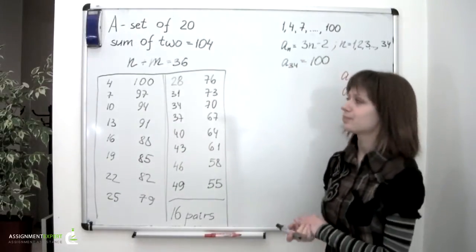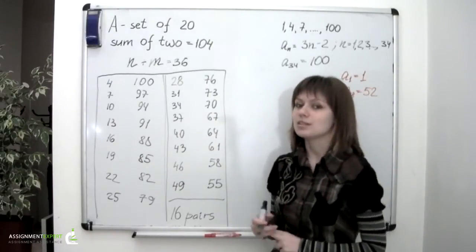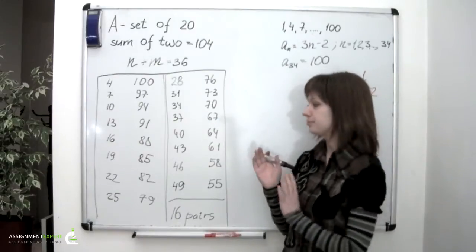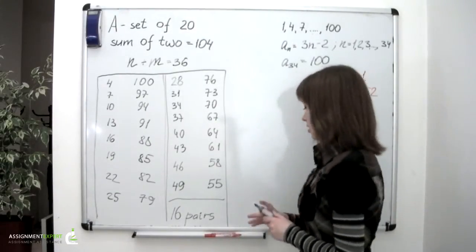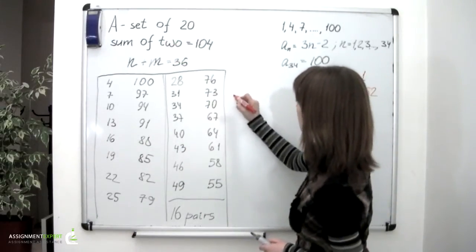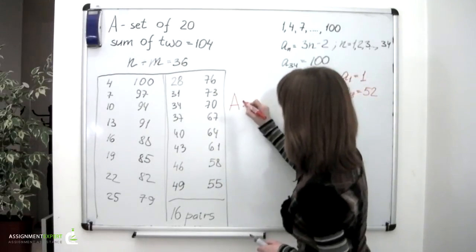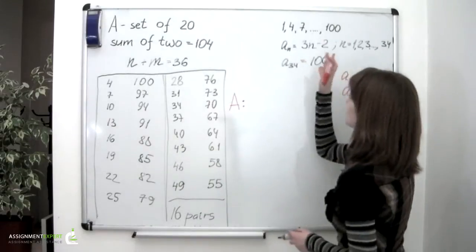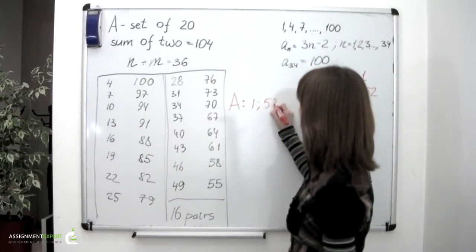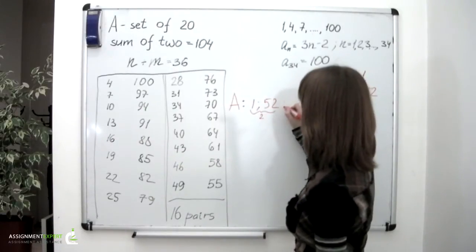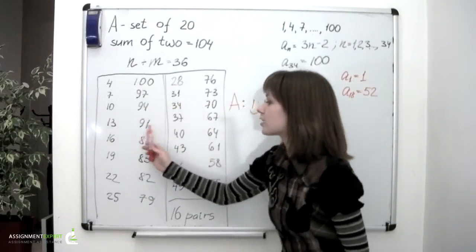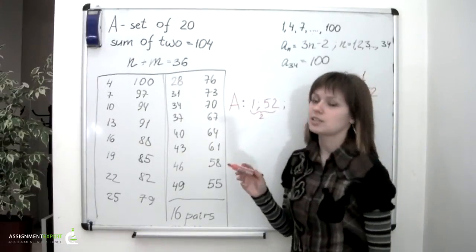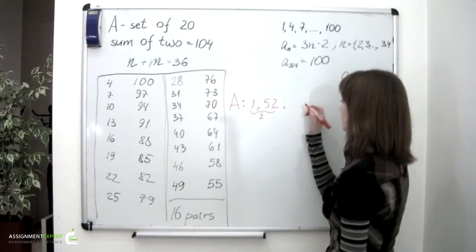Now let's use the pigeonhole principle. It states that if we want to place n items into m pigeonholes and n is more than m, then at least one pigeonhole will contain more than one item. Let's consider the worst scenario. Let's say that the set A contains these two numbers which we've already discussed. They won't give us 104 added to any other number of this progression. So we have these two numbers. Then let's pick one out of each pair so that we are sure that none of these 16 we've picked would give us 104 added to any other of these numbers we already have in this set.